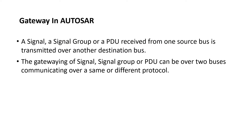Gateway is a feature in which a signal, a signal group, or a PDU received by an ECU from one source bus is transmitted over another destination bus. The gatewaying of signal, signal group, or PDU can be done over two buses communicating over the same or different protocol.